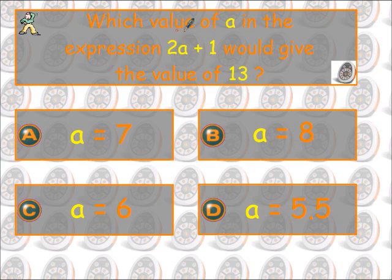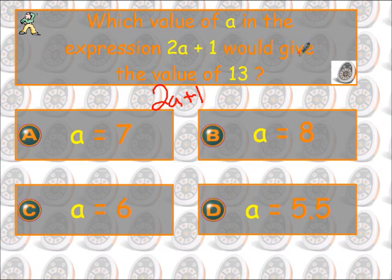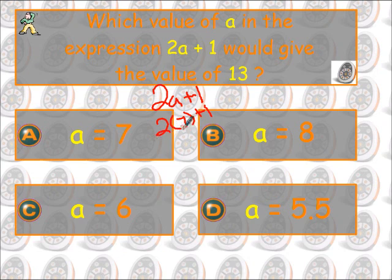Alright, over here we've got a little bit more — we've got 2a plus 1. They want to know which value of a in the expression 2a plus 1 would give you the value of 13. Let's start with a equals 7. So you're going to plug in 2 times 7 plus 1. Remember order of operations — you're going to do multiplication first. So 14 plus 1 is 15. So that one's not right.